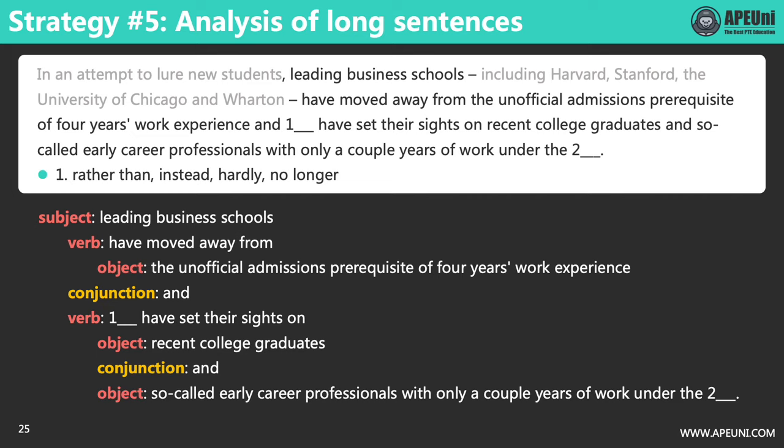'Have moved away from the unofficial admission prerequisite of four years' work experience.' There is a verb — 'have moved away from' — and an object. Now we can confirm that 'leading business schools' is the subject. We've found one set of subject, verb, and object, which conveys a complete meaning. But we're not done yet. Then there is a conjunction AND connecting two similar parts, which often share the same semantic structure.